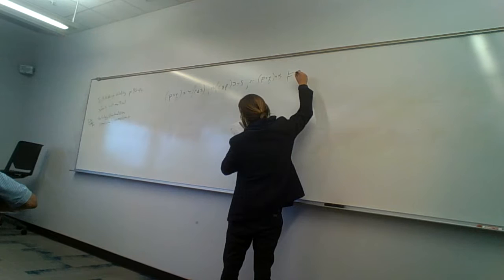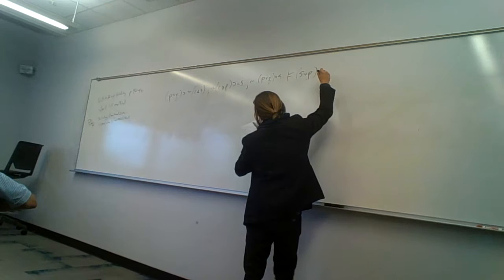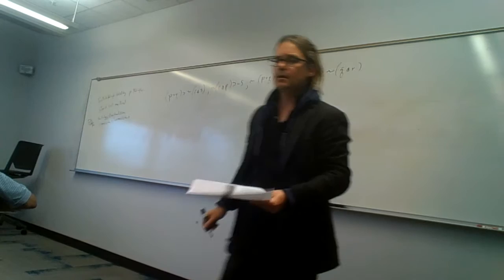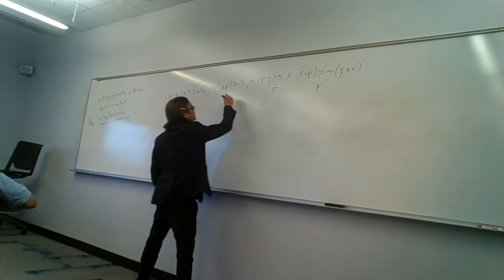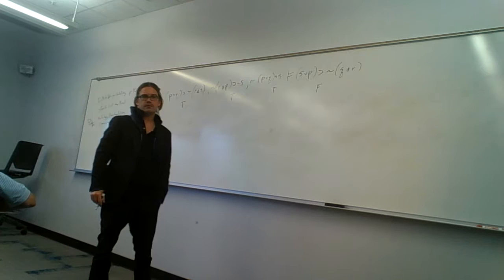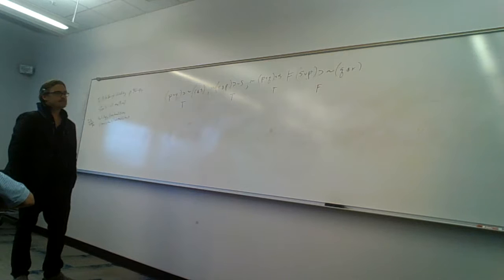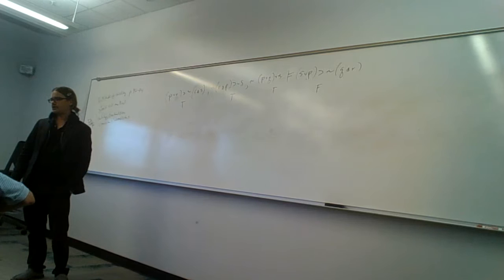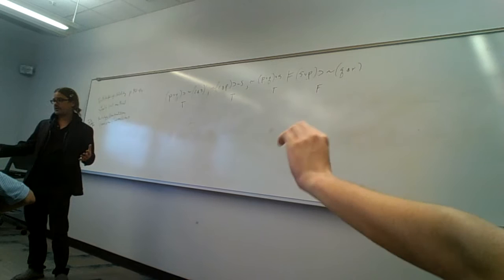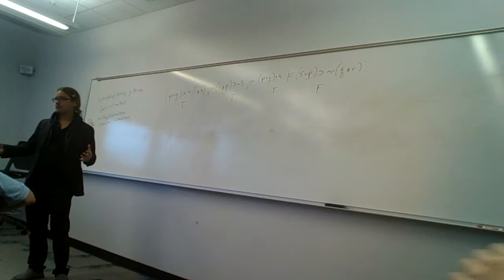And the conclusion is S-or-P horseshoe not-(Q-and-R). The same strategy applies: I want to make my conclusion false and all my premises true. I'm going to assume that's possible and see if I can do it without a contradiction. Work each premise and see if you can make them all true and the conclusion false. If I can do that consistently I have a counterexample and it's invalid; if I cannot, it's valid.